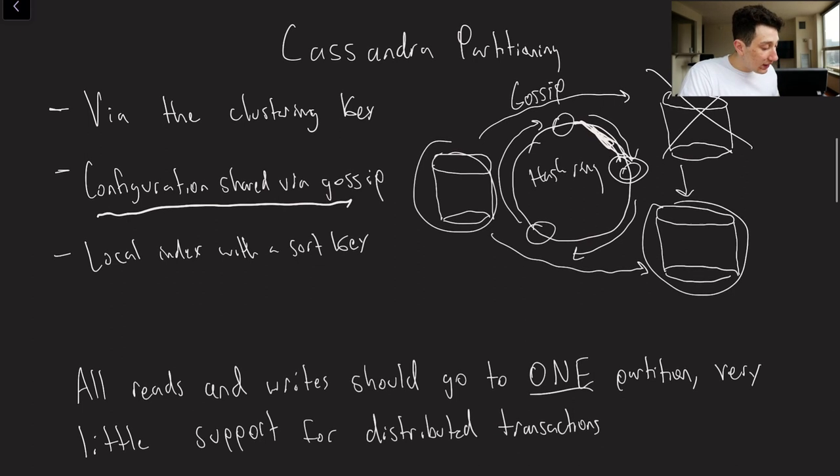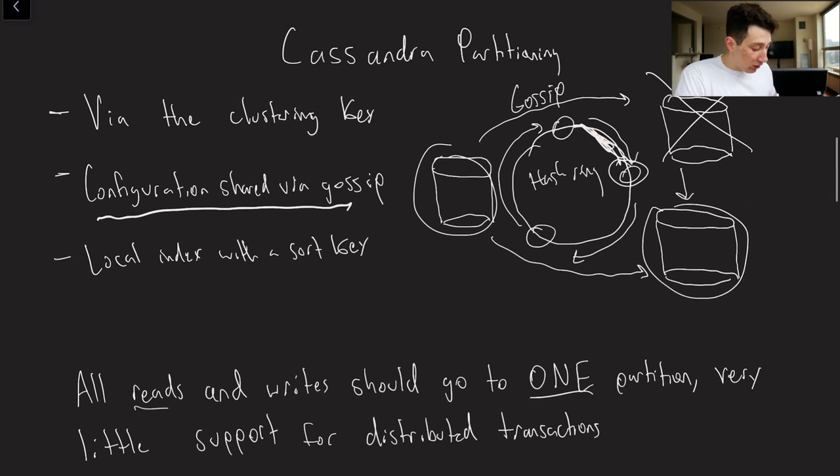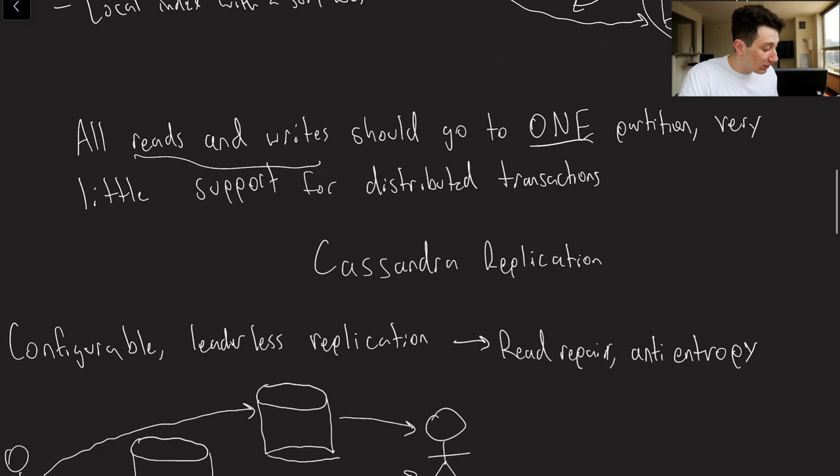In Cassandra, it's actually a very opinionated system about how they want reads and writes to go. Typically it is very strongly recommended that all reads and writes go to just one partition. There is very little support for distributed transactions. If you're running Cassandra, you don't want to be running two-phase commit. Ideally all of your reads are coming from one partition at a time and all of your writes are going to one partition at a time. So that's very important to keep in mind.